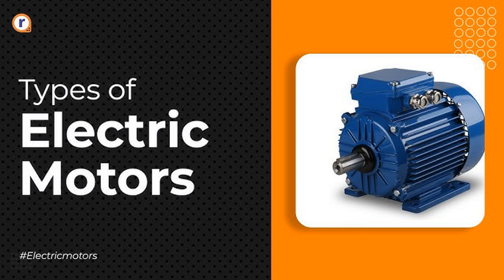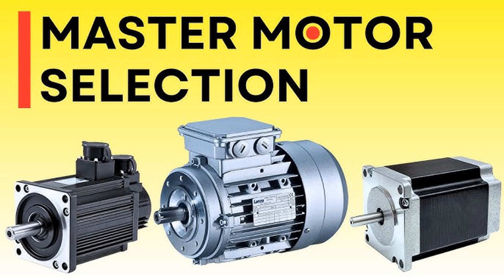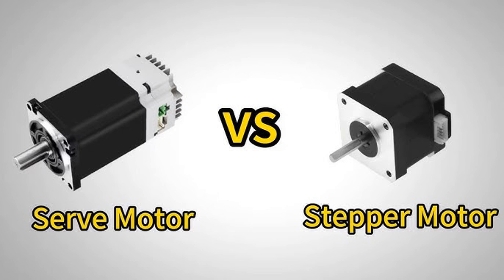Synchronous motors are designed to run at a constant speed, synchronized with the frequency of the AC supply. The rotor can either have permanent magnets or windings that create a magnetic field when energized. The rotor locks onto the rotating magnetic field of the stator, rotating at the same speed as the magnetic field with no slip. They are used in applications requiring precise speed control, such as synchronous generators, large fans, pumps, and power plants.